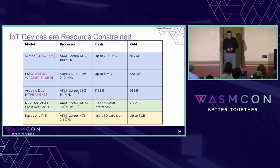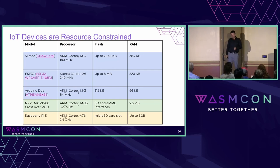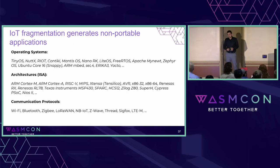Many IoT devices, or microcontrollers, are super resource constrained — which we all understand, but maybe forget because we're in the cloud-native world where we have lots of resources. Some of these have minuscule amounts of memory, although by historical standards it's quite a lot. The other problem is that in the IoT and embedded development space, there's a lot of fragmentation on many levels.